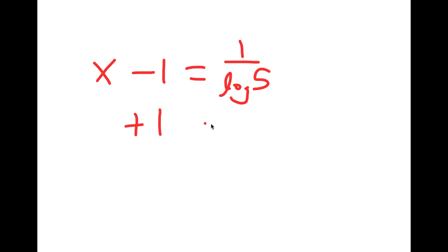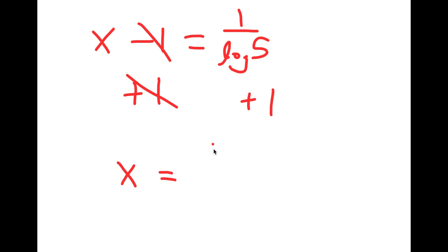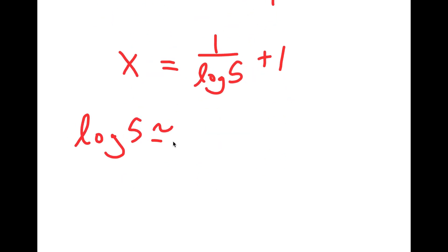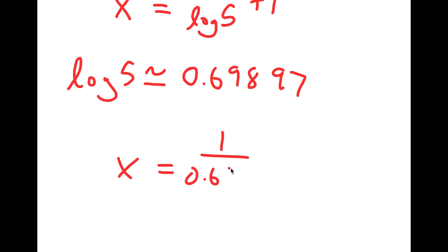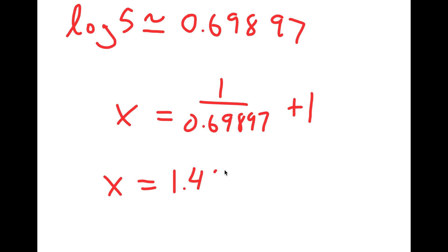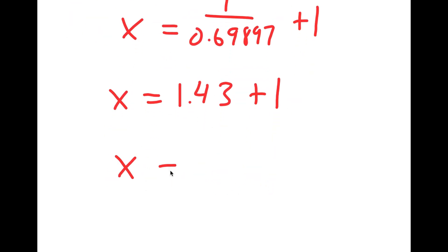And from here, I'm going to add 1 on both sides. So I get x is equal to 1 over log 5 plus 1. Now, log 5 is equal to 0.69897, so 1 over log 5 is equal to approximately 1.43. So 1.43 plus 1, that's equal to 2.43. So 2.43 is my answer.